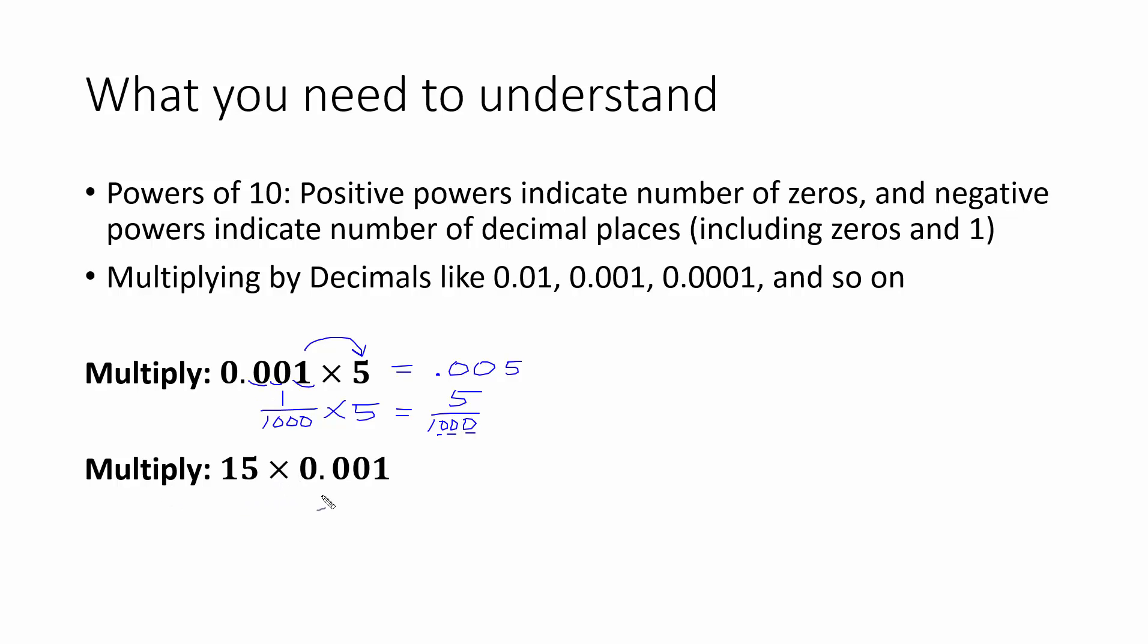Let's try this with 15 times 0.001. 15 times 1 is just 15. 0.001 has 3 decimal places. So we're going to count 3 decimal places, starting at the 5 and moving to the left. 1, 2, 3. Our decimal needs to go here, so we're going to need another 0 to hold that place value.